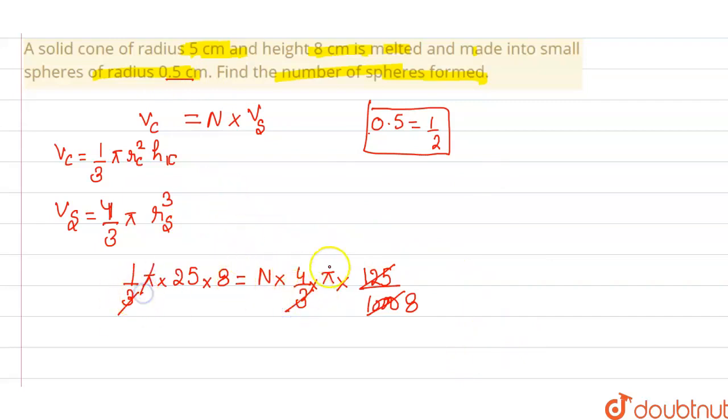Now, 3, 3 cancel out pi, pi cancel out 4, 2 times. Now, 25 into 8, 200, 200 into 2,